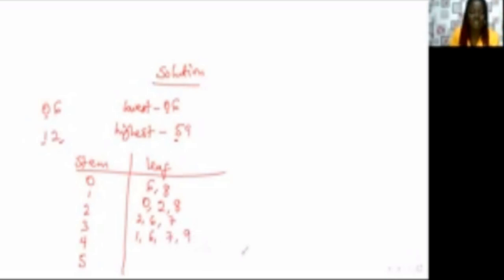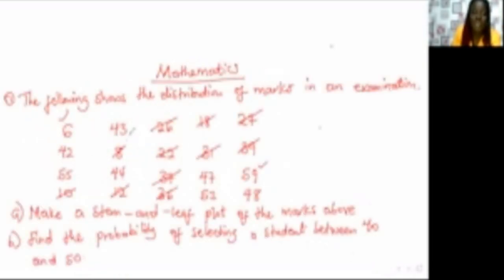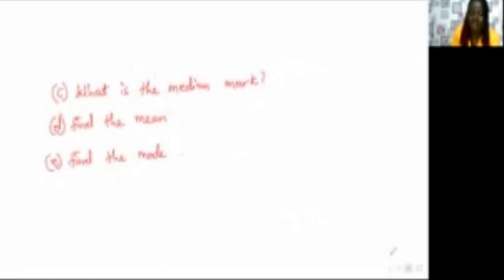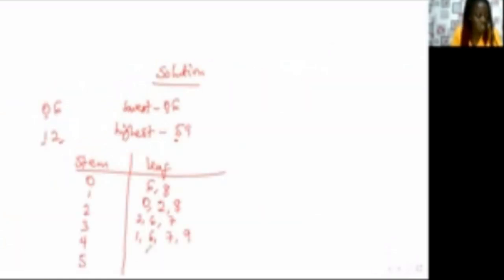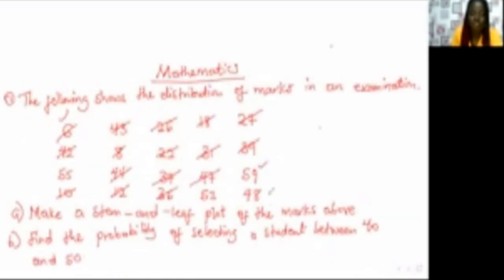Then we count the fourth column. For the fourth column we have 42, 43, 44, and 47. So let's fill it in: 42, 44, 47, 48, and another 48. Then we count the fifth column — we have 53, 55, and 59.